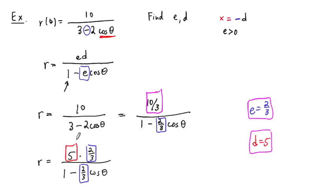Remember, we have a conic section with eccentricity 2 thirds, directrix given by, so that's D equals 5. But remember, the equation was X equals negative 5 because of the minus in front of the cosine. Our directrix is over there.